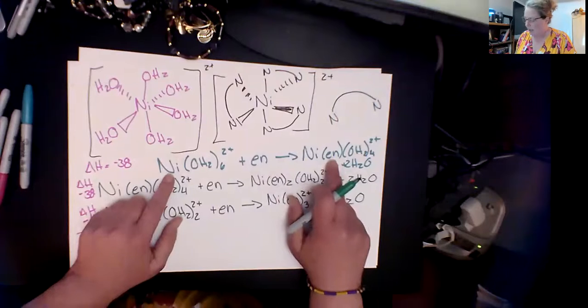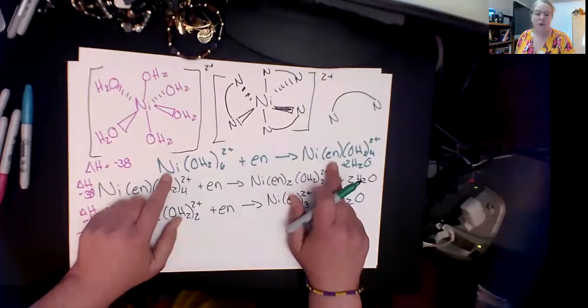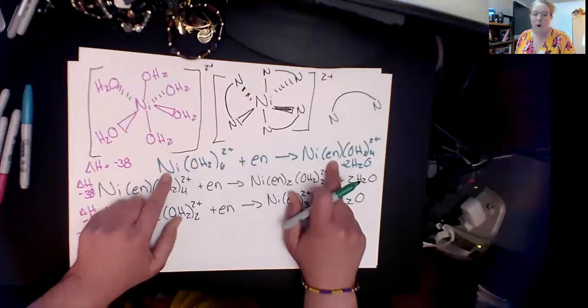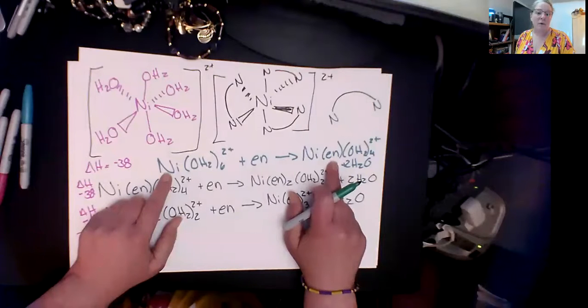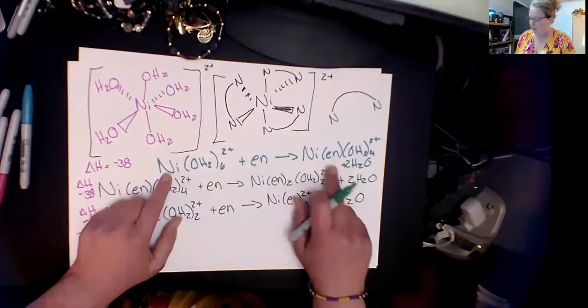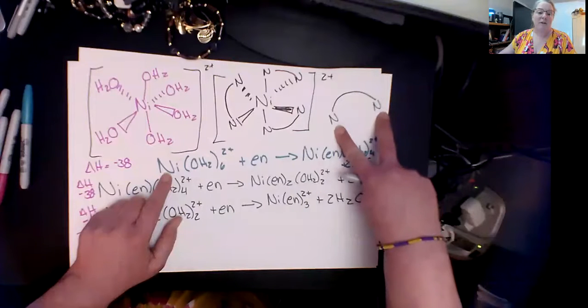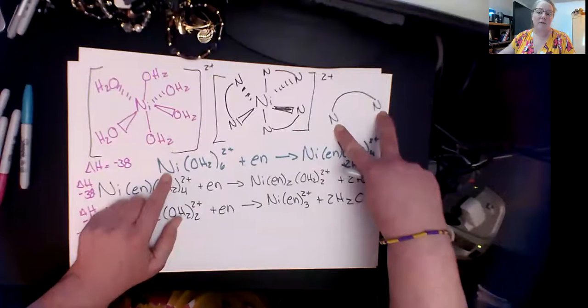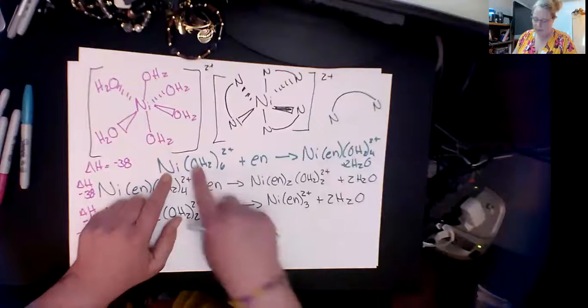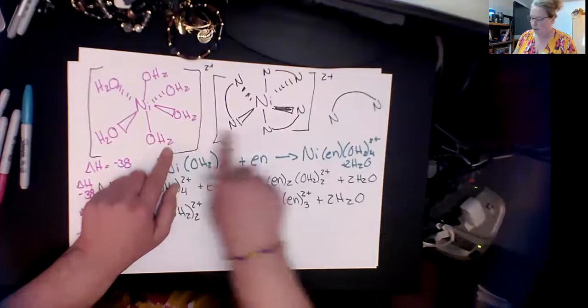In the end what you've done is a molar ratio of one addition so you've replaced, you displaced two water molecules with one en addition. There's my two waters, this is my one en addition, it's because it takes up two bonds.